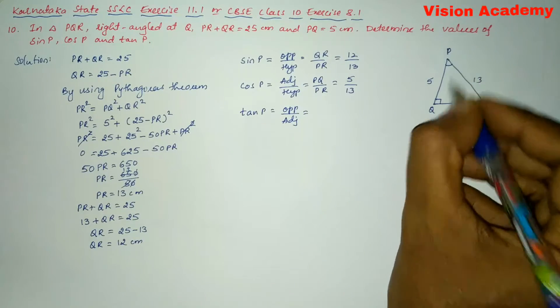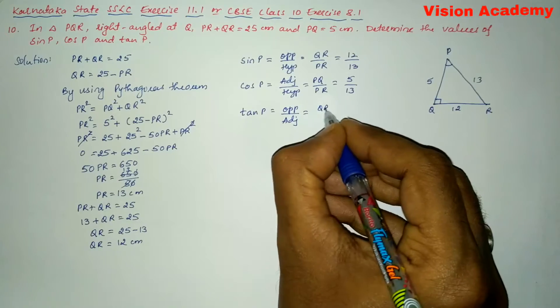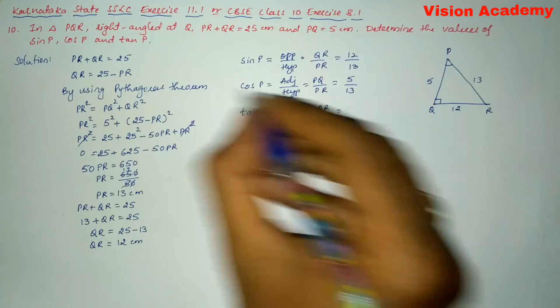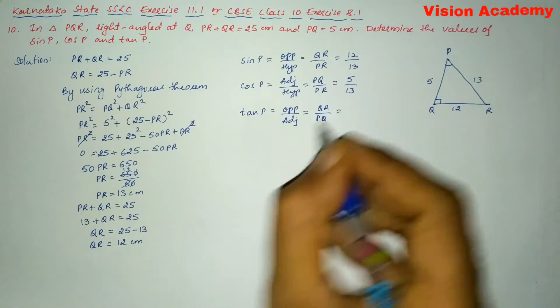So here QR is 12 and PQ is, you can see here PQ is 5.